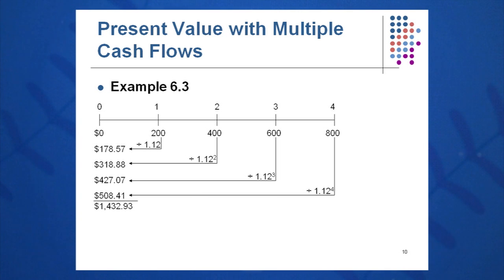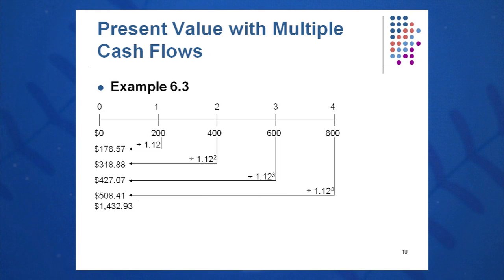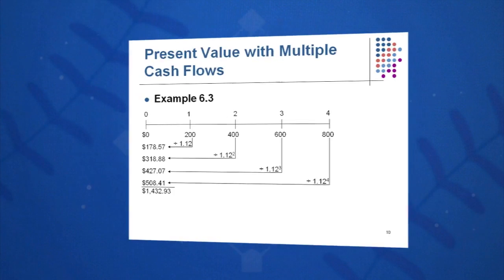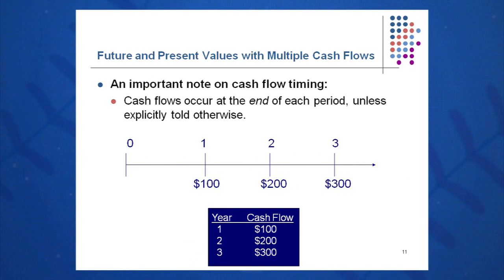You get approximately $1,432 by discounting those cash flows back to today. Notice that in a world with no discounting, you'd have $200 plus $400 plus $600 plus $800, or $2,000. But with this severe discounting at a 12% rate, you have $1,432 today — pointing out the key point that $1 today is not worth $1 sometime in the future.